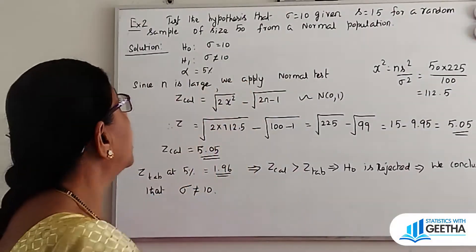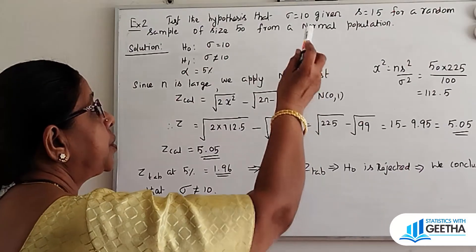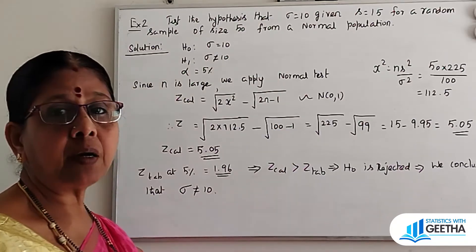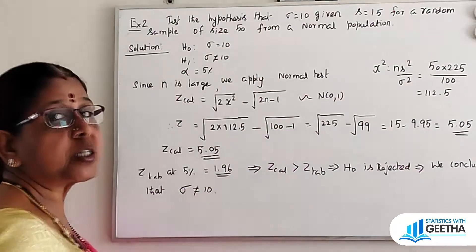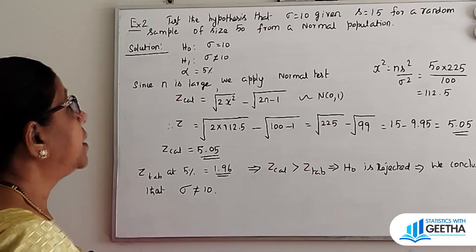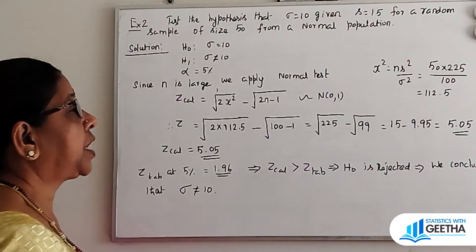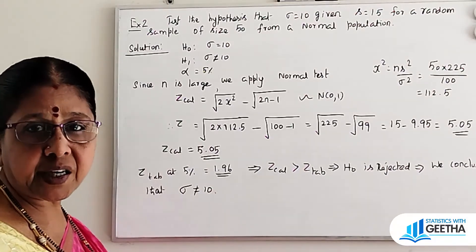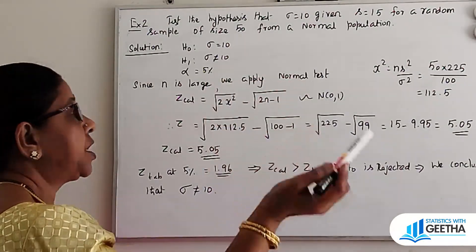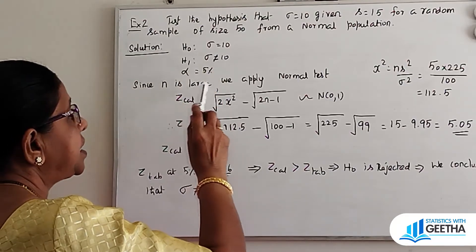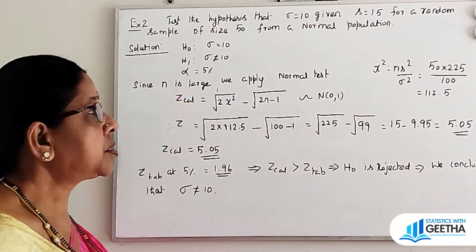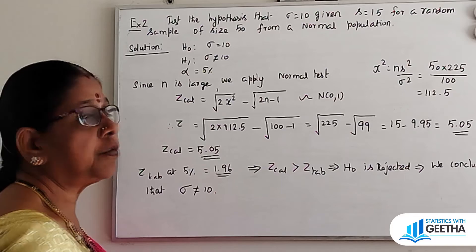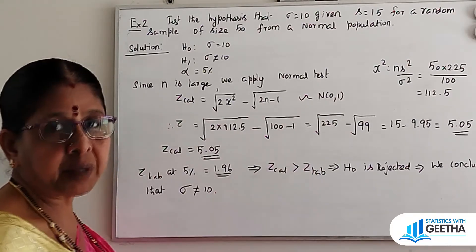Second exercise: test the hypothesis that sigma equal to 10, given s equal to 15, for a random sample of size 50 from a normal population. This is a large sample. Solution: H naught sigma equal to 10, H1 sigma not equal to 10. Sigma is standard deviation, sigma square is variance. Alpha equal to 5%. Since n is large, we apply Fischer's approximation and the normal test. Z calculated value is root of 2 chi-square minus root of 2N minus 1, which follows normal with mean 0 variance 1.